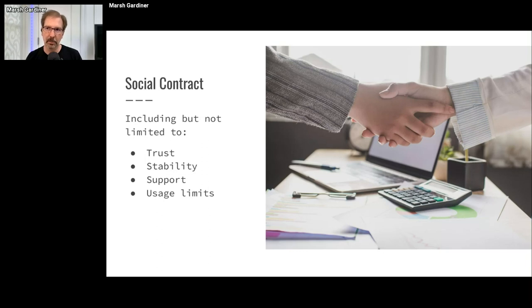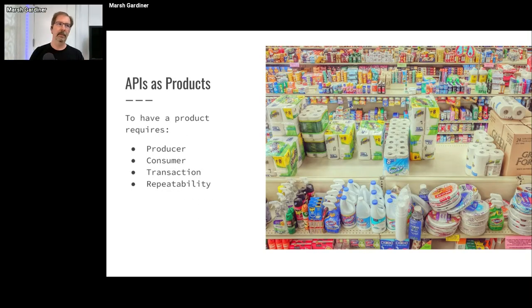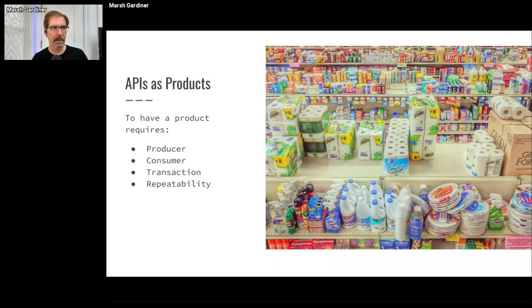The moment you onboard a consumer user who's not also a producer — meaning they don't have responsibility or visibility into the service that implements the API — that's when you've crossed this threshold. The social contract includes things like trust, stability, support, usage limits, etc. These are the non-functional entitlements that surround the technical object that is the API. That's what I mean when I talk about API products.